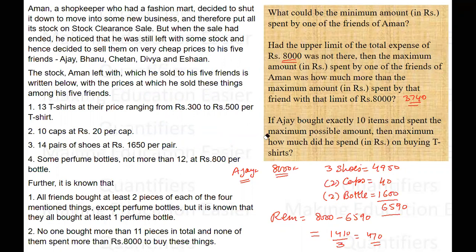The third question asks: if Ajay bought exactly 10 items and spent the maximum possible amount (the maximum is 8000 rupees), how much did he spend on buying the T-shirts? So Ajay is not spending more than 8000 rupees and the total items bought by him are 10. Since he cannot buy four pairs of shoes — as clearly discussed in the previous question — he must buy at most three pairs of shoes.